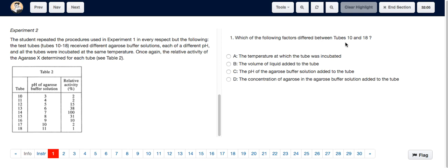For question 1, we have to examine tubes 10 to 18, which is Experiment 2, and it says which of the following factors differed between tubes 10 and 18. So tube 10 is here, tube 18 is here.